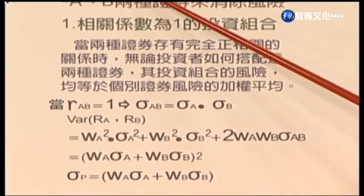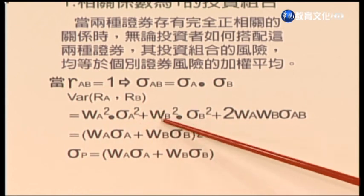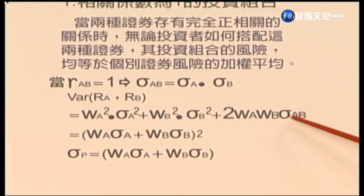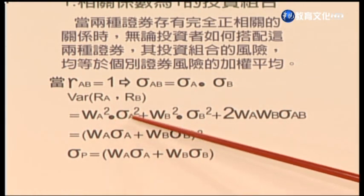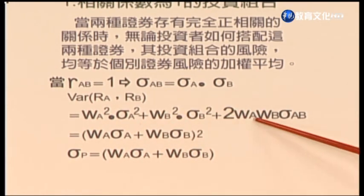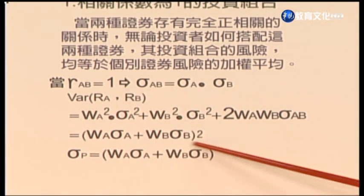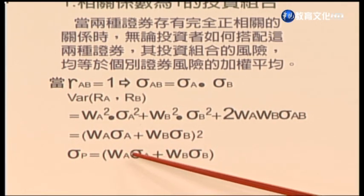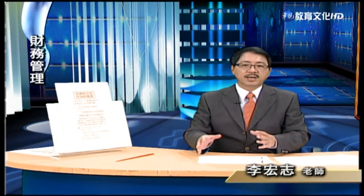當兩個是完全正相關，無論投資者如何搭配這兩種證件，其投資組合的風險等於個別證件風險的加權平均。若RAB等於1，則Sigma AB等於Sigma A乘以Sigma B，代入兩種股票的變異數公式，就變成(WA*SigmaA + WB*SigmaB)的平方。所以標準差就是WA*SigmaA加WB*SigmaB，即投資在個別A跟B的權重乘上各自標準差，沒有把風險分散掉，這是因為它們兩個是完全正相關造成的。